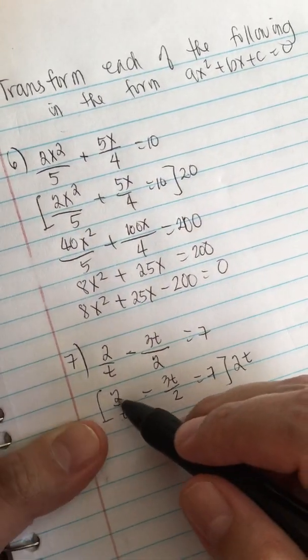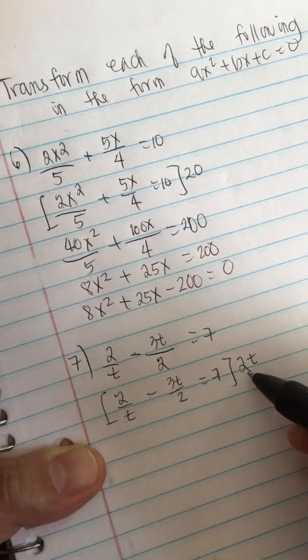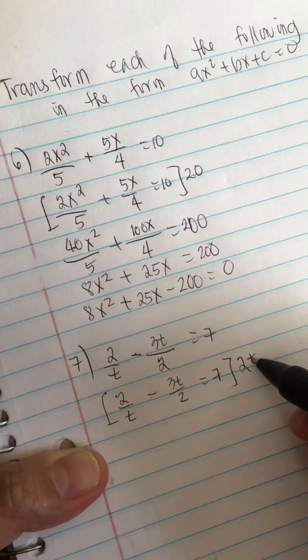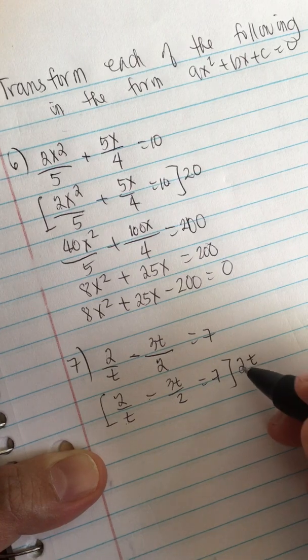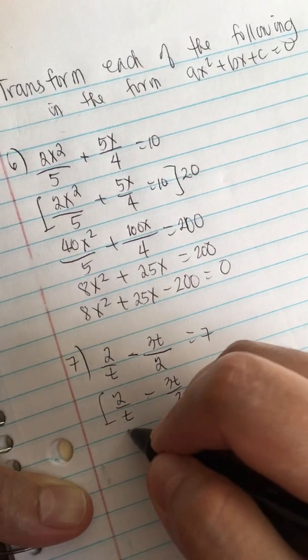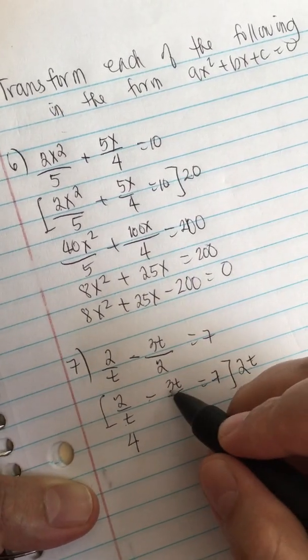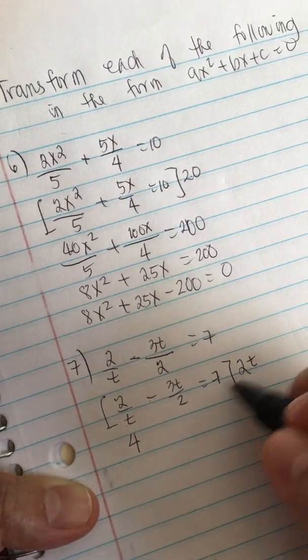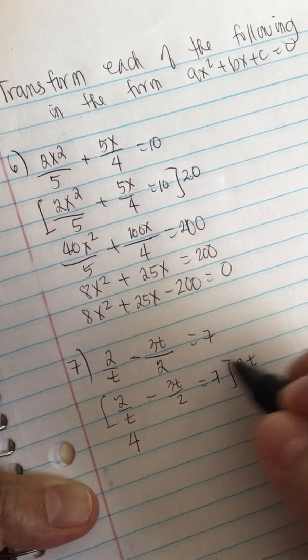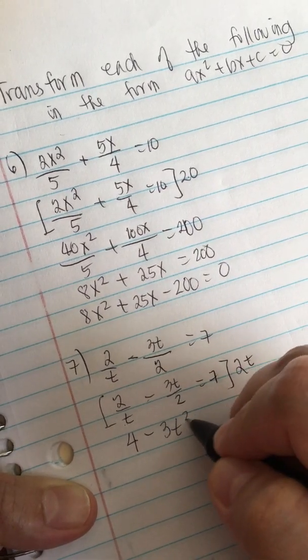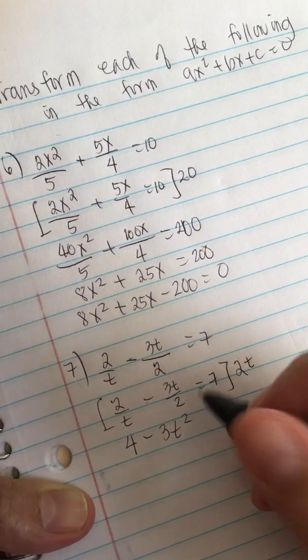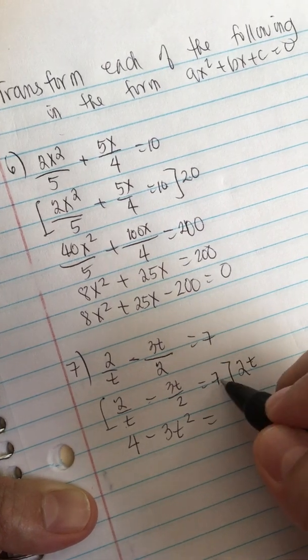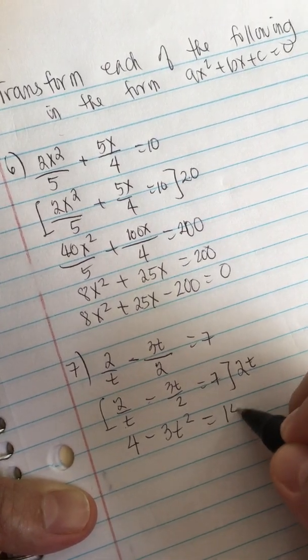In this fraction, we multiply it with 2t. The t's will cancel, so we have only 2 times 2 equals 4. In this fraction, we have 2t, so we have just t left multiplied by minus 3t, so minus 3t squared. Then 7 times 2t equals 14t.